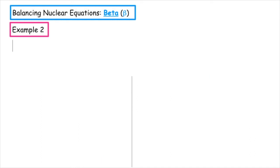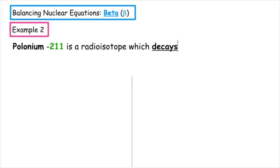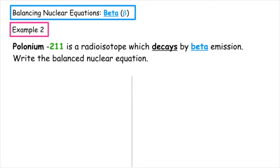Example two: we have polonium-211, which is a radioisotope which decays by beta emission. Write the balanced nuclear equation. Polonium has the chemical symbol Po, the atomic number 84, and the mass number 211. It decays, giving off a beta particle, which is an electron. The charge of an electron is minus one and the mass of an electron is zero.